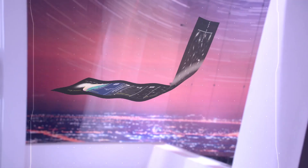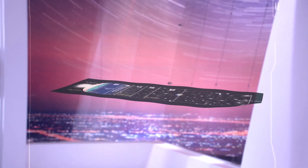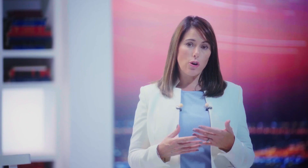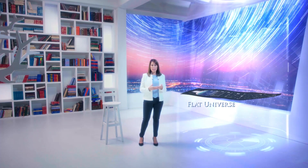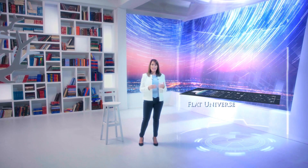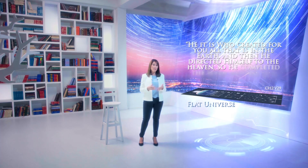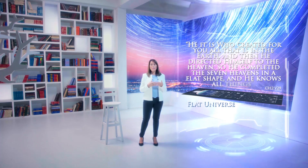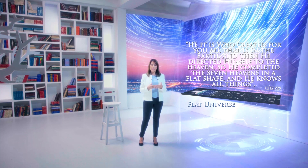Moreover, although we know that the earth is round, it's actually more like a bumpy spheroid. NASA has determined the geometry of the universe to be nearly flat. And God tells us in the Holy Quran that he completed the creation of space's seven eras in a flat shape. In chapter 2, verse 29, the Holy Quran states: 'It is he who created for you all that is in the earth, and then he directed himself to the heaven. So he completed the seven heavens in a flat shape, and he knows all things.'